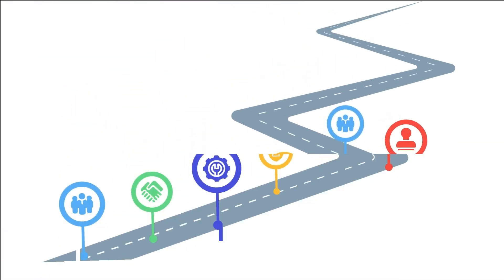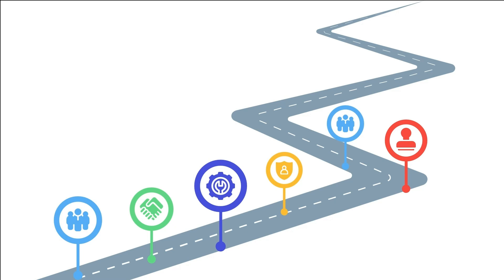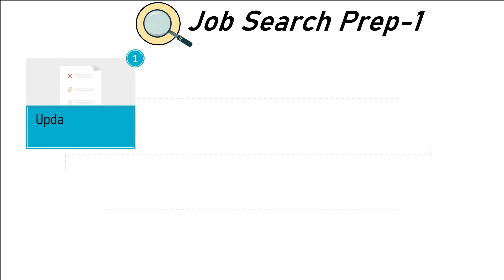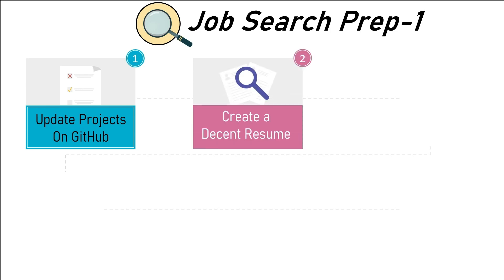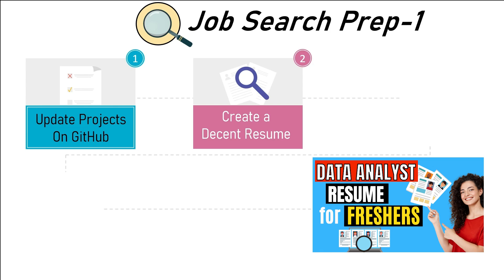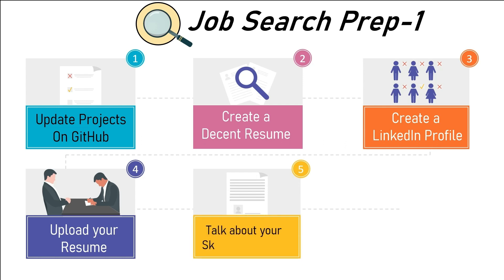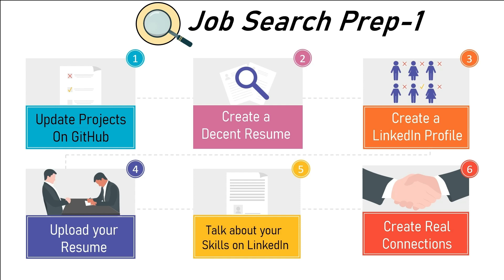Once that intermediate project is ready, you can take a break of a day or two — but not complete rest, because there are three pre-job prep tasks. First, upload all the projects you've made till now on GitHub. Then make a resume including all the skills you've learned, with a project section listing two to three lines about each project along with GitHub links. Also create a LinkedIn profile, upload your resume in the featured section, post weekly learnings about data science, and start sending connection requests to HRs, CEOs of tech companies, or people working as data scientists.